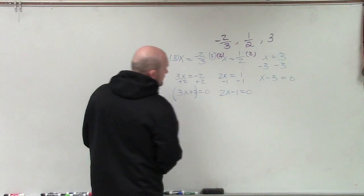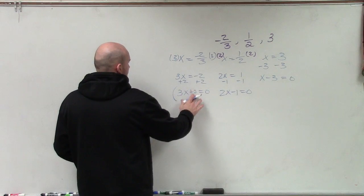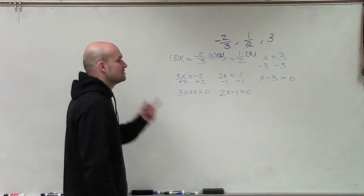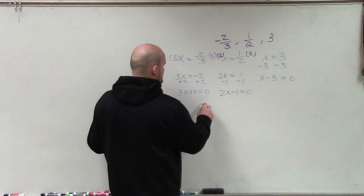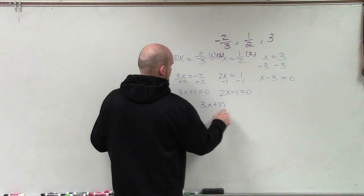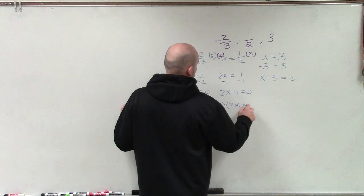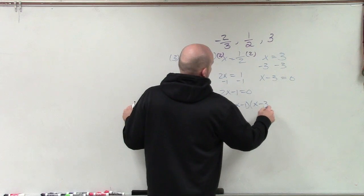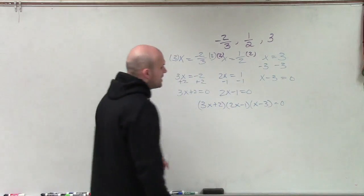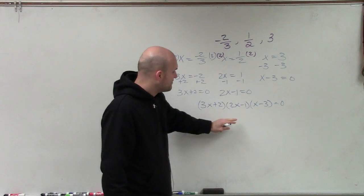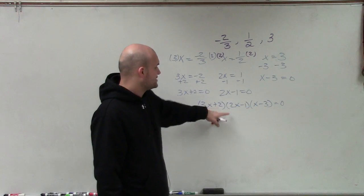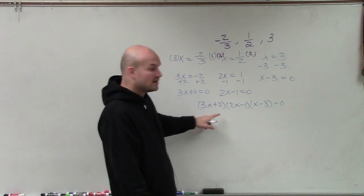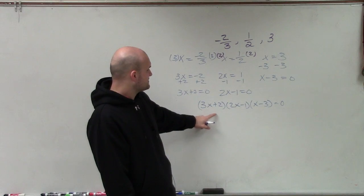All right. So now that we have each of our factors set equal to 0, now I'm going to undo my zero product property and set them all equal to each other, equal to 0. And if you think about doing the zero product property, instead of working the problem down, if I was working the problem up, this is exactly the case that we do to find the zeros. If I gave you a polynomial that was written in its product of its factors,